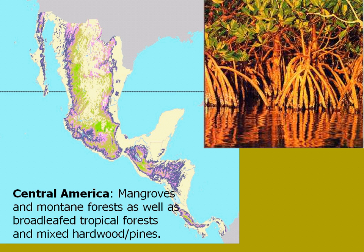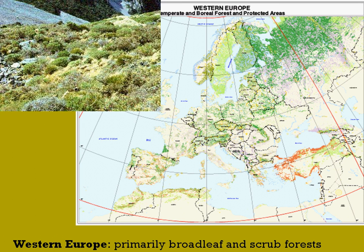In Western Europe, you end up with primarily broadleaf forests and scrub forests. As mentioned in the first microlecture for this module, there's not a lot of species diversity. You do end up with a lot of scrubby forests, especially in drier areas in far Western Europe like Spain and Portugal, where they have a lot of fires.